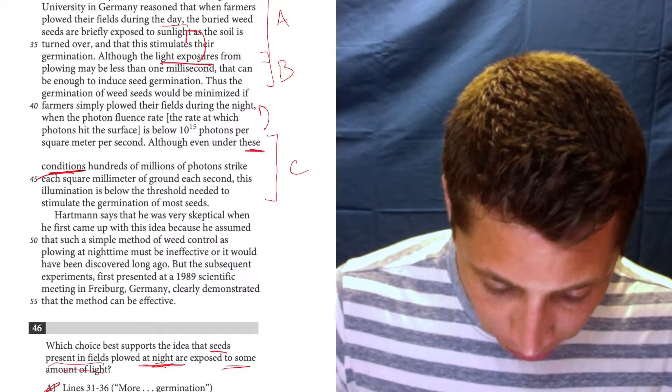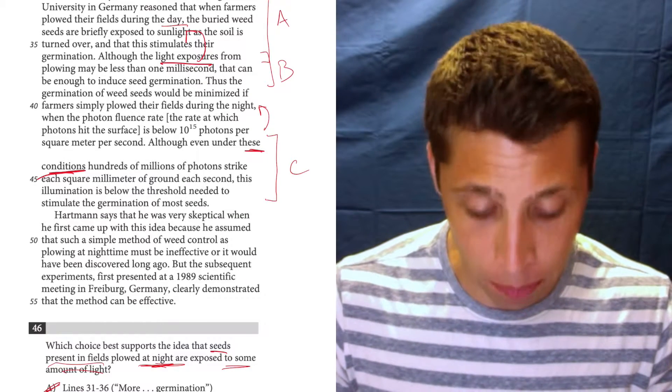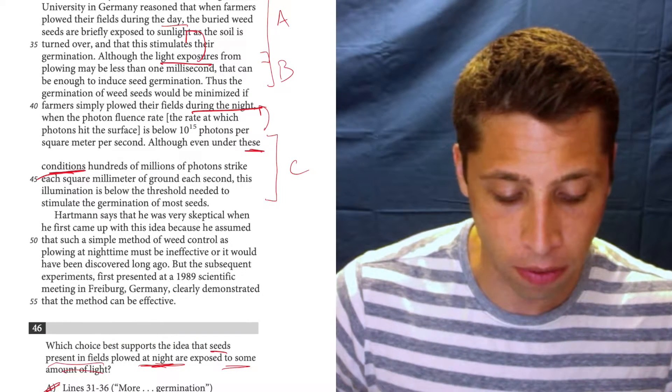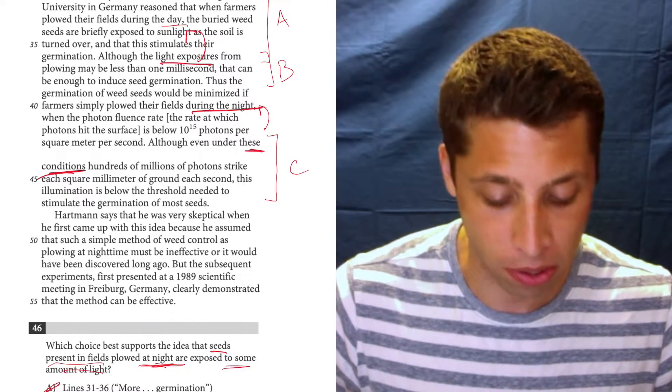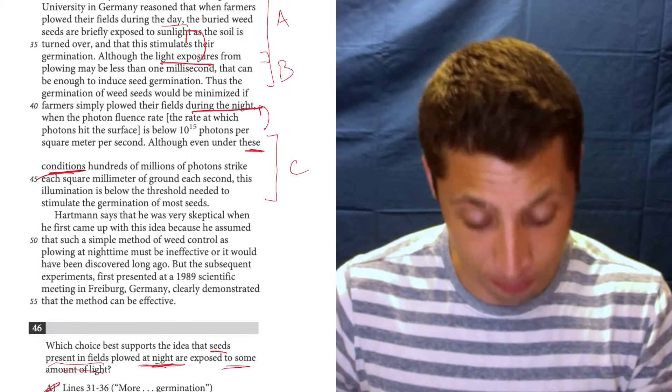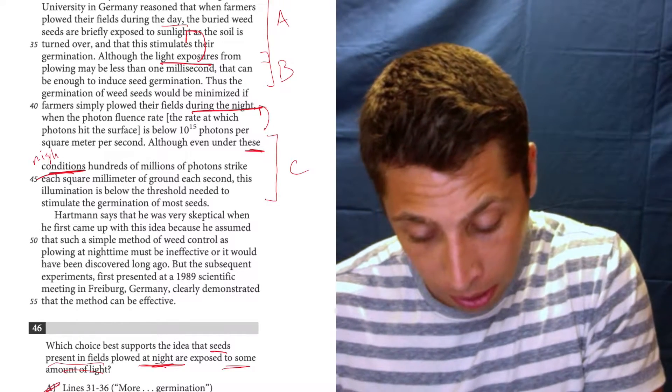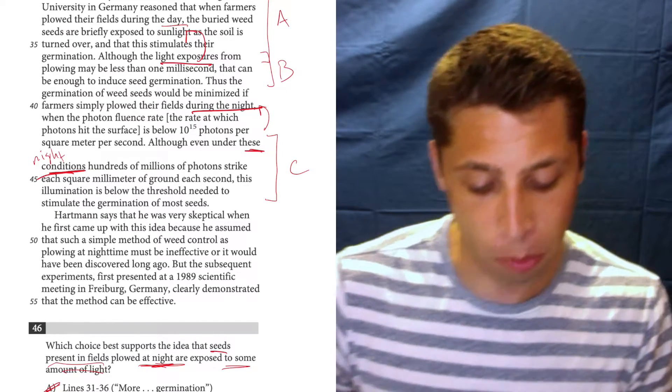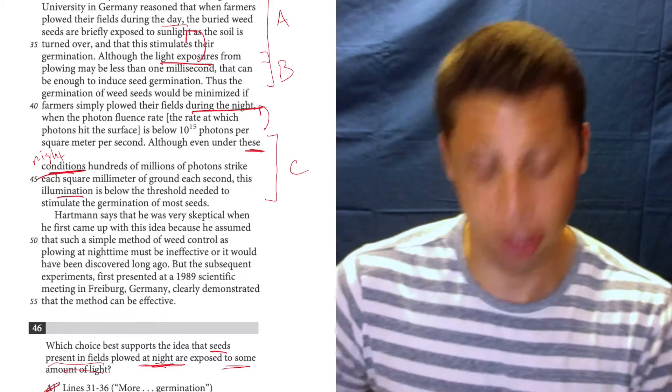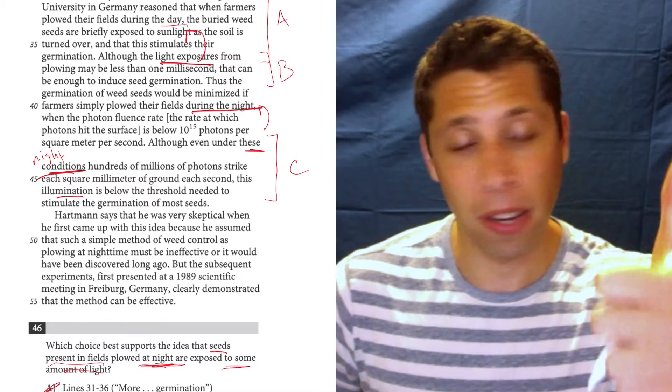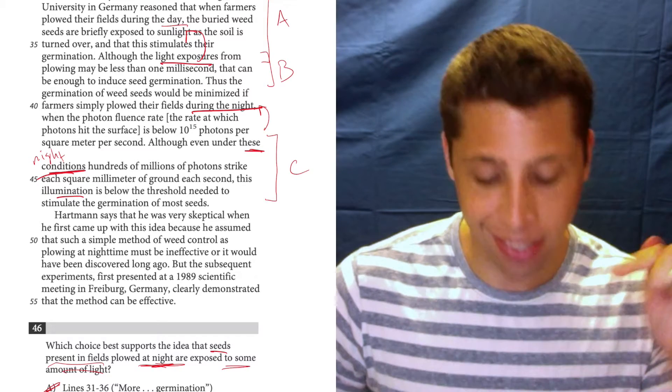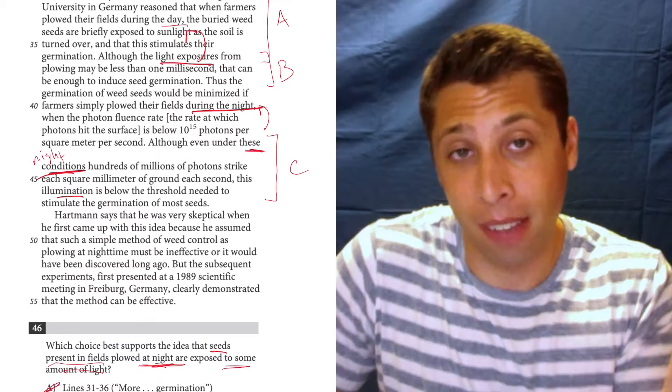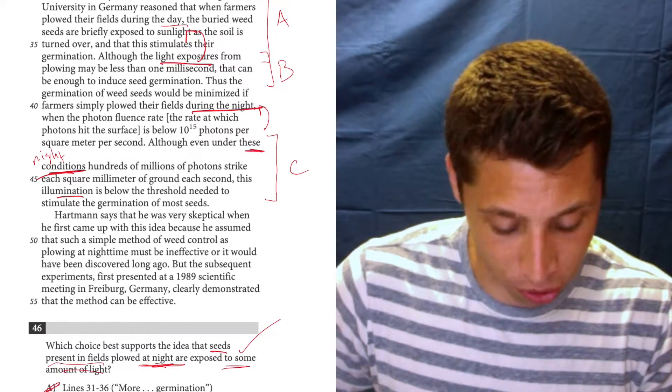Let's see. Let's read back. Thus, the germination of weed seeds would be minimized if farmers simply plowed their fields during the night when the photon fluence rate, the rate at which photons hit the surface, is below 10 to the 15th photons per square meter per second. So under the conditions of nighttime, that's what this is about, hundreds of millions of photons strike each square millimeter of ground each second. This illumination is below the threshold needed to stimulate the germination of most seeds. This is the answer. It's talking about night, and it is saying that some light hits the seeds. It's not enough to germinate them, but it's some. It's some, and that's good enough. That's what the question wanted.